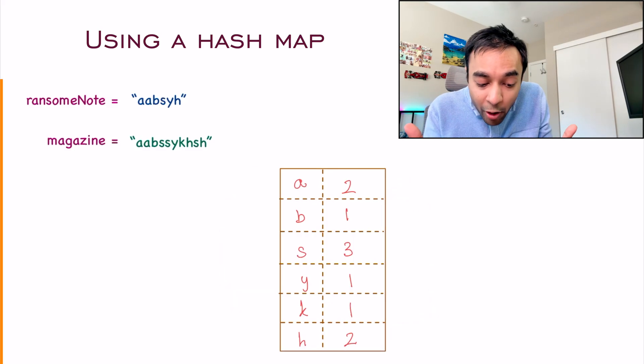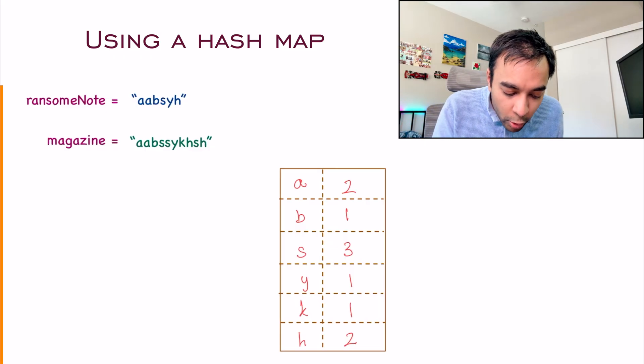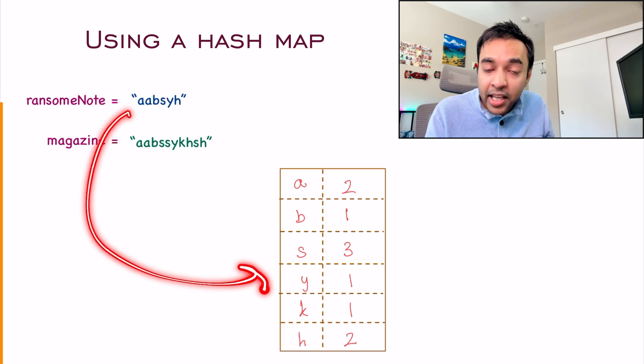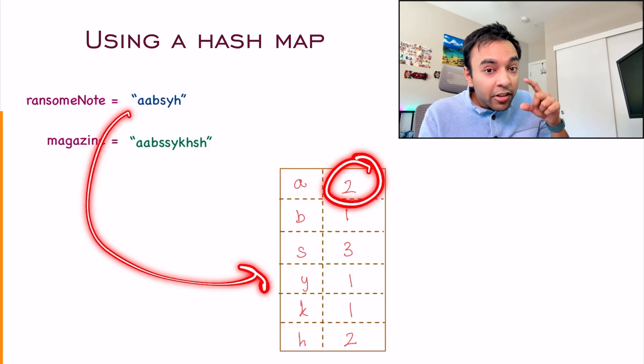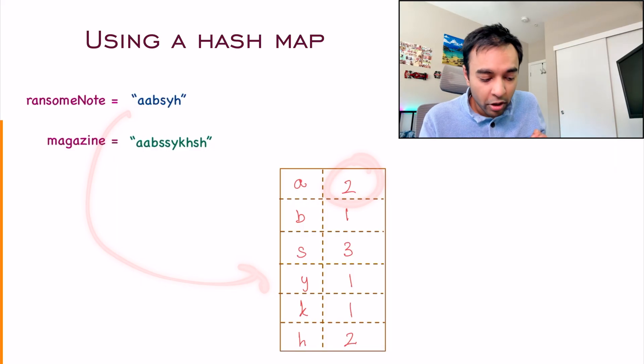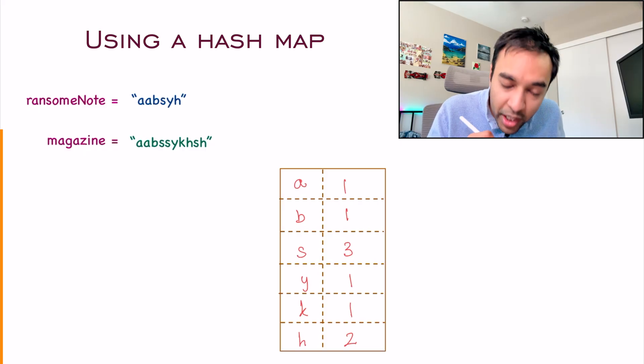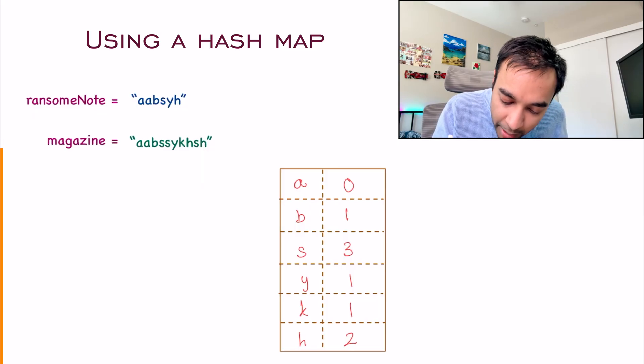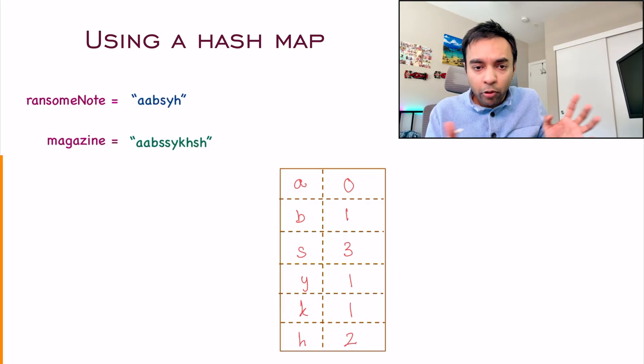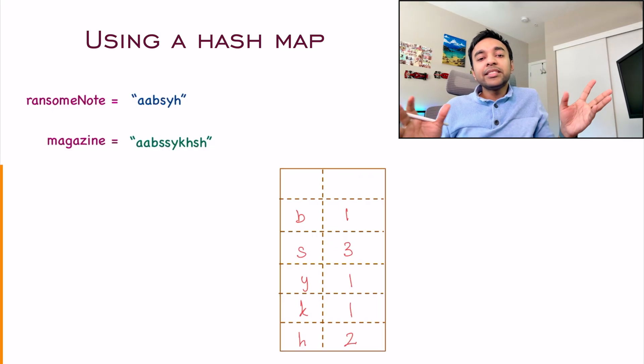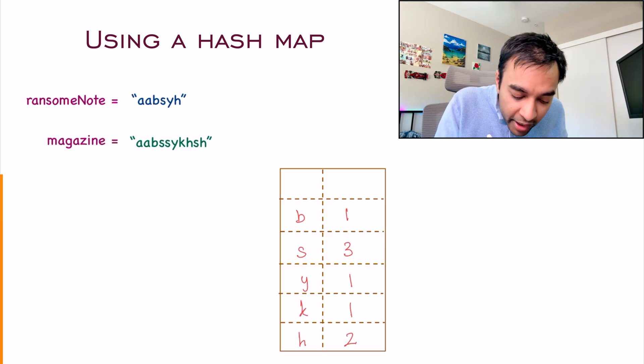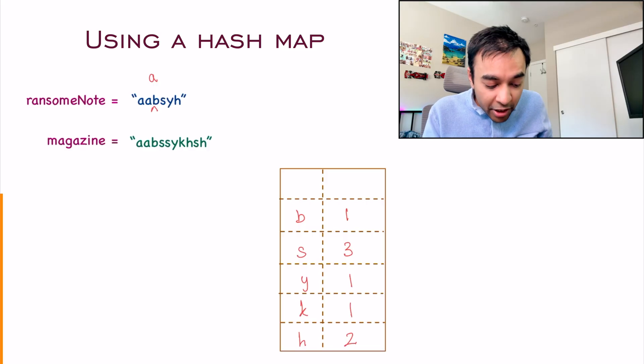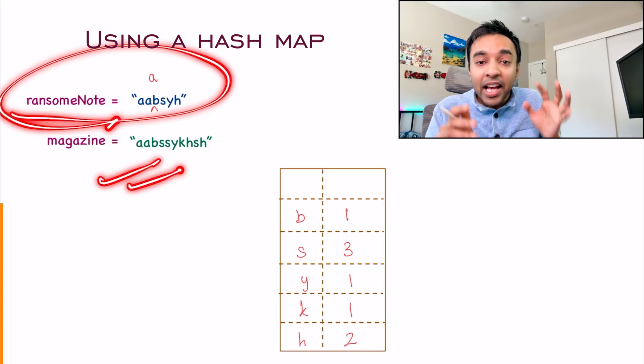This is how my frequency map looks like. I know how many letters I have to consume from. Now look back at your ransom note. You iterate over each of these characters one by one. Look up in your hash map. If this character is available, check its frequency. You have an A available and its frequency is 2. It means you can use one of it. So you decrement it and its frequency becomes 1 now. Go to the next character. It is A again. Once again, it is available. So you decrement its frequency and now it becomes 0. As soon as it becomes 0, you can completely remove it from your map. It means I don't have any more A's to consume from.